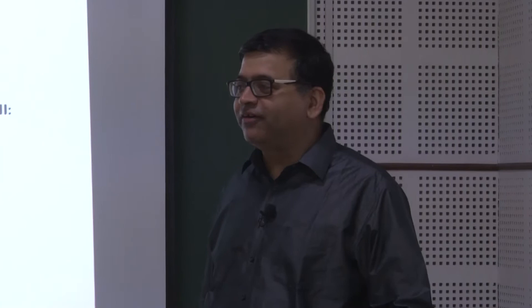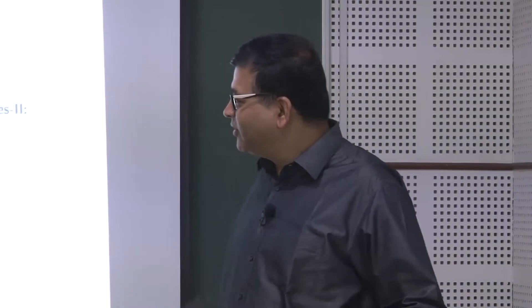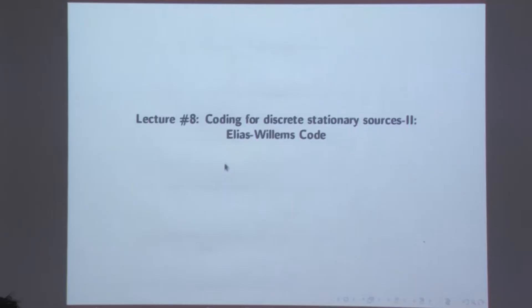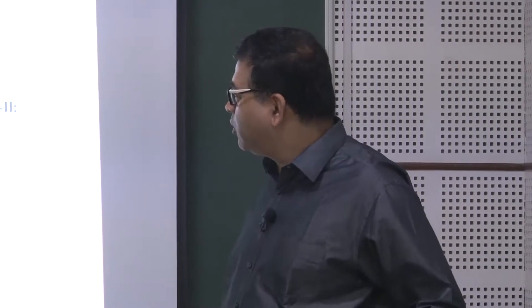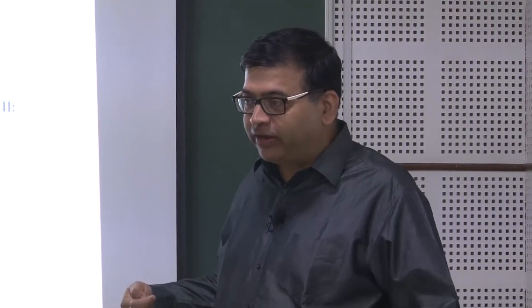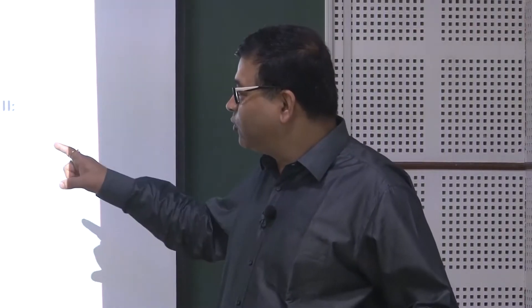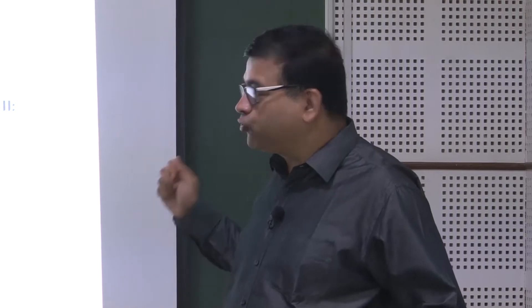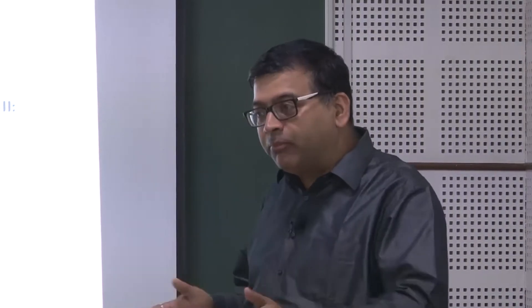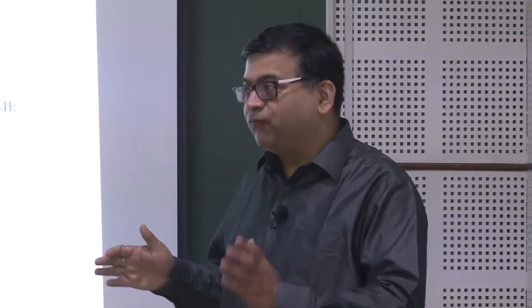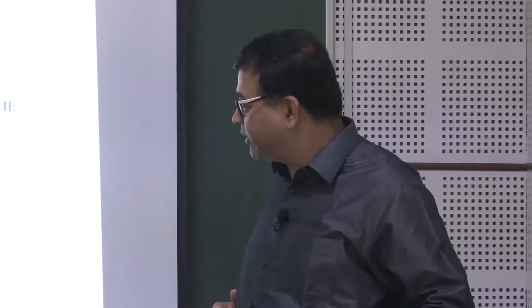Welcome to the lecture on coding for discrete stationary source. In this lecture we are going to talk about one particular example of block-to-variable length coding for discrete stationary source, which is known as Elias-Williams code. We are going to show how we are exploiting the memory inherent in the source for doing our block-to-variable length coding.